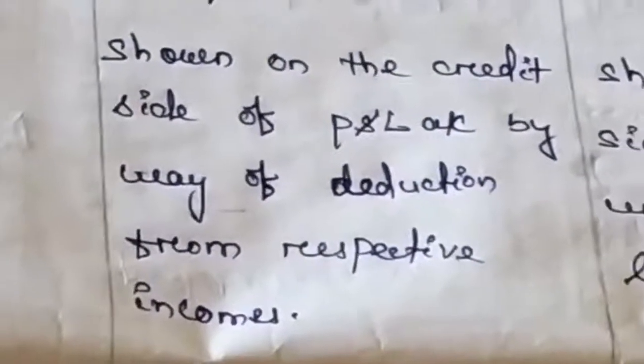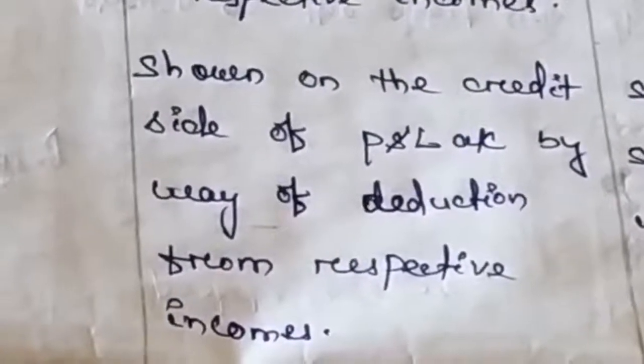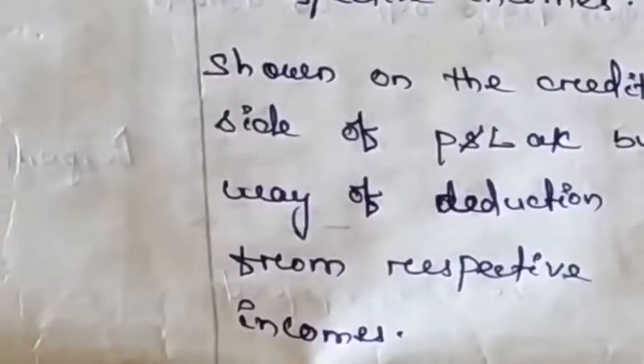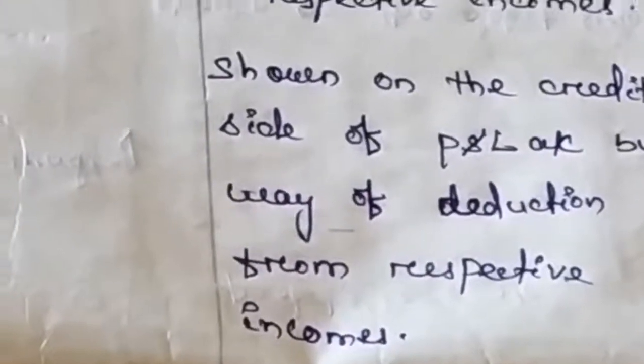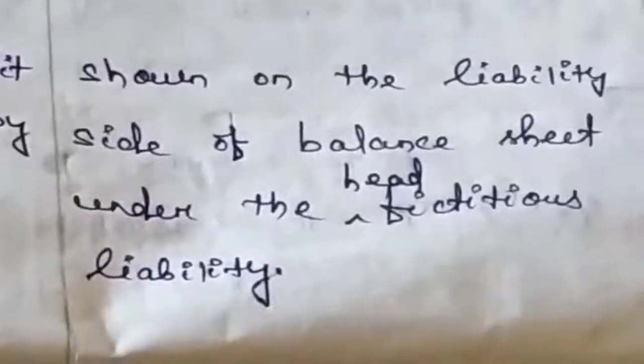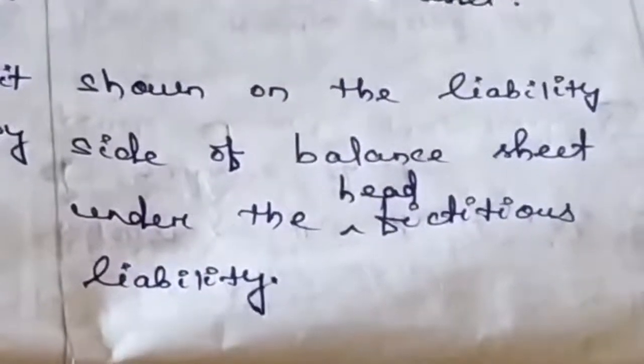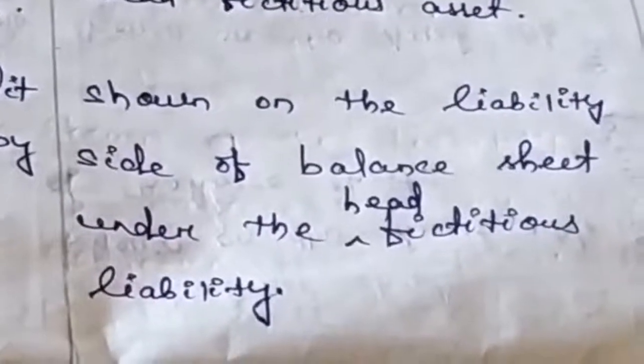Since income received in advance by the accrual concept is a liability — without having any physical form but existing for a particular time period — it is called a fictitious liability. The second treatment is shown on the liability side of the balance sheet under the head fictitious liability.